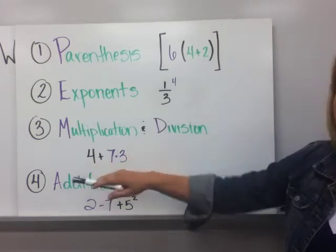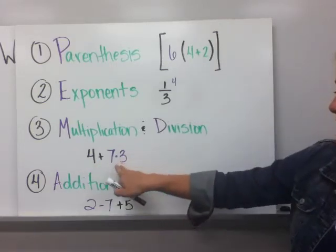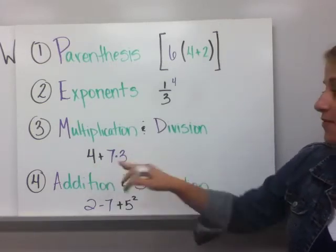So if we have the expression four plus seven times three, we're going to evaluate seven times three first.